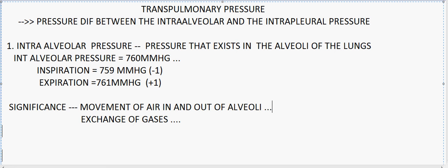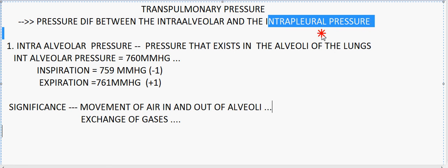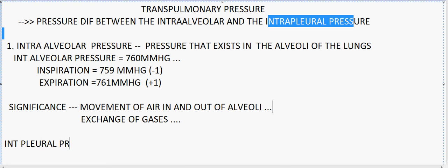Another important fact: when we compare the intra-alveolar and the intrapleural pressure, the intrapleural pressure is always lesser than the intra-alveolar pressure. In any form — be it inspiration or expiration, in any kind of respiratory cycle — the intrapleural pressure is always lesser than the intra-alveolar pressure.